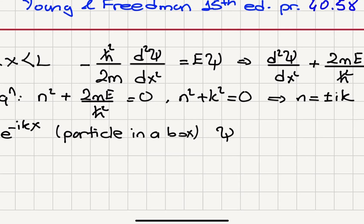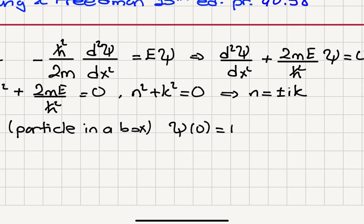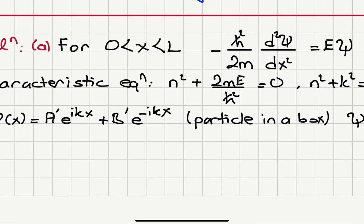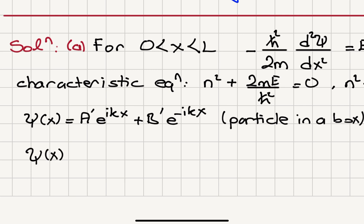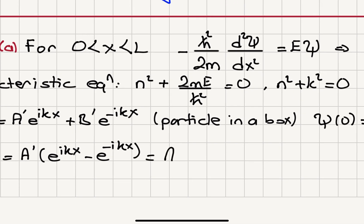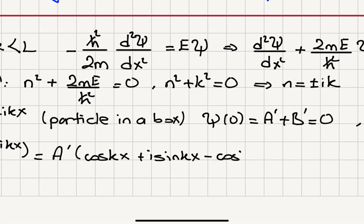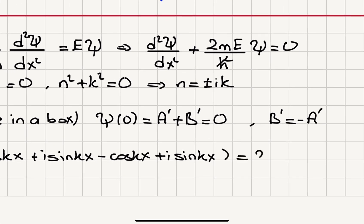The wave function has to satisfy the boundary condition — it has to vanish at x = 0, so A′ + B′ = 0, meaning B′ = −A′. Substituting, ψ(x) = A′(e^(ikx) − e^(−ikx)). Using Euler's formula: cosine(kx) + i·sine(kx) minus cosine(kx) plus i·sine(kx), this equals 2A′i·sin(kx).